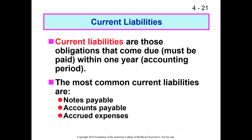We have current liabilities and long-term liabilities. Current liabilities are always identified as such. The definition between current and long-term is the same as for current and long-term assets: the dividing point is one year. For assets, it was whether you'd use or convert them to cash within a year; for current liabilities, we expect to have to pay those obligations within a year.